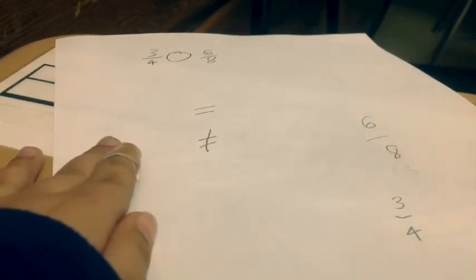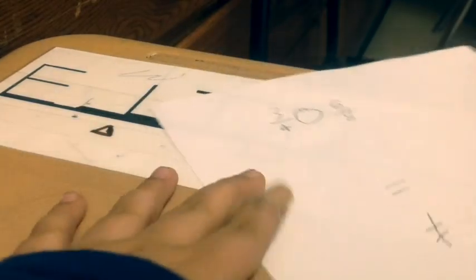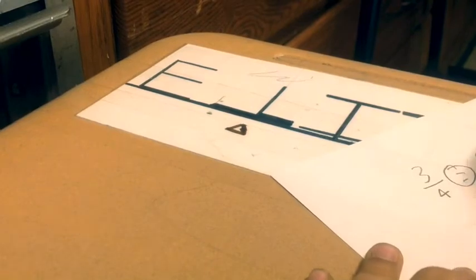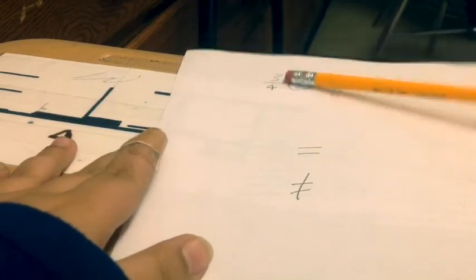Three-fourths is actually equal to six-eighths. So now I'm going to say it is equal. There we have it. Six-eighths is actually equal to three-fourths.